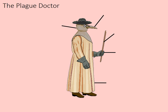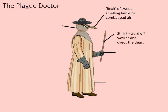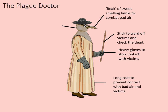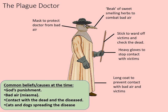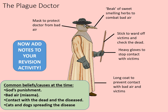Consider the plague doctor. The plague doctor wore a beak of sweet-smelling herbs to combat the miasma theory, carried a stick to ward off victims and check the dead while maintaining social distance, wore heavy gloves to stop contact with victims, and a long coat to prevent contact with bad air. They also wore a mask to protect from bad air. Based on this diagram, add notes to your revision activity. Which of these measures represents continuity between the cause of disease believed in the Middle Ages and in the Renaissance? Are there any examples of progress?